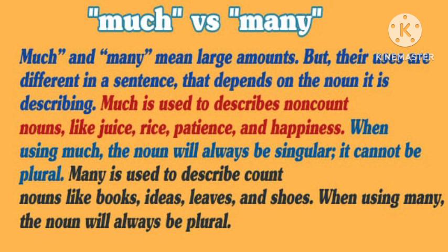Much is used to describe non-count nouns like juice, rice, patience, and happiness. When using much, the noun will always be singular — it cannot be plural. On the other hand, many is used to describe count nouns like books, ideas, leaves, and shoes. When using many, the noun will always be plural.